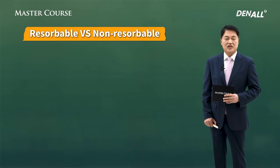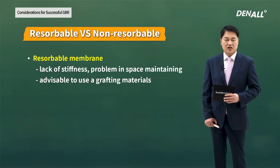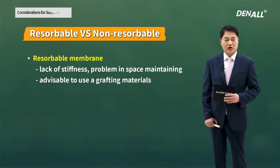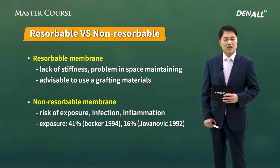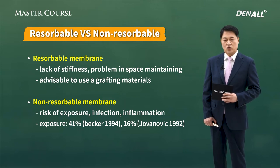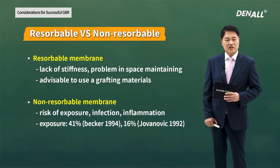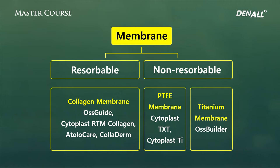Membrane can be divided into resorbable and non-resorbable. Resorbable membrane lacks stiffness and has a problem in space maintaining, so graft materials need to be used sufficiently. Conversely, for non-resorbable membrane, because there is stiffness, it can maintain space well, but biocompatibility is lacking and there is risk of exposure and inflammation. According to literature, when you use non-resorbable membrane, risk of exposure is 16% to 42%. I normally use collagen membrane for resorbable, and oskyte or cytoplast for non-resorbable.